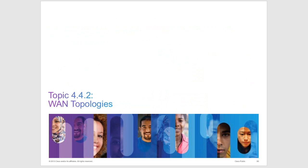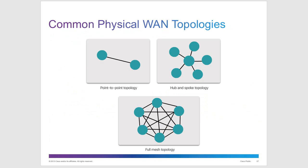WAN topologies include point-to-point, hub-and-spoke, and full mesh. In most networking situations, a hybrid — a combination of these — is probably the most typical topology you'll see. Star topology is actually a LAN topology, not WAN.